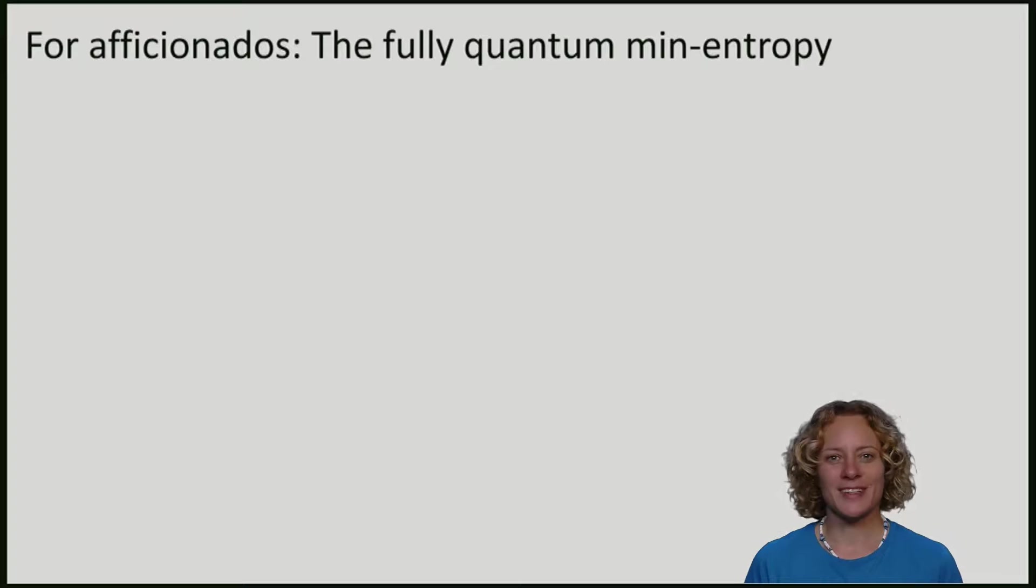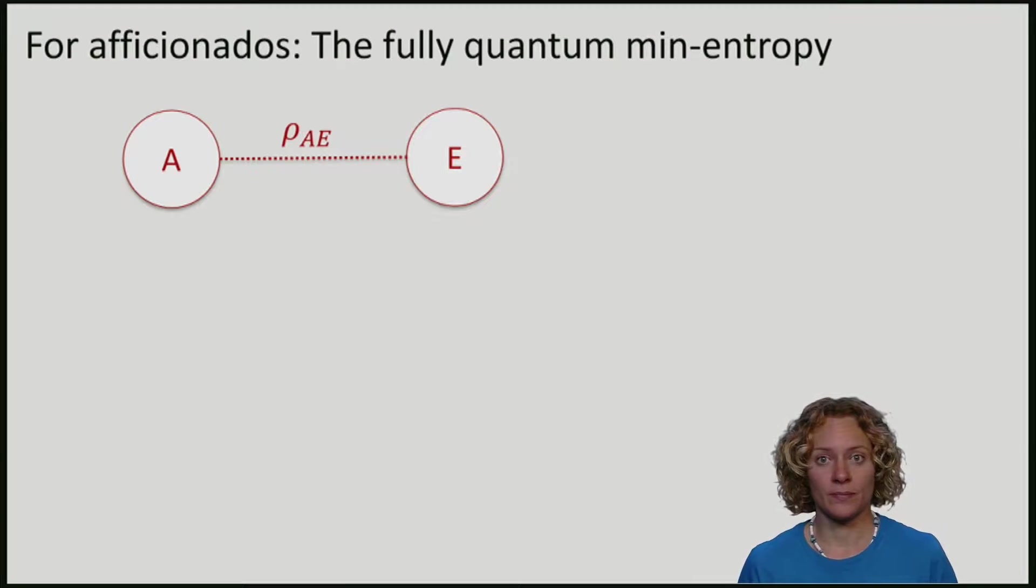For completeness, I also want to tell you what is the fully quantum min-entropy. Because, of course, you might have been wondering, what if x is not classical, but quantum? Is there also something like the min-entropy? Indeed, the probability of guessing does not really make sense here. What would it mean to guess a quantum state?